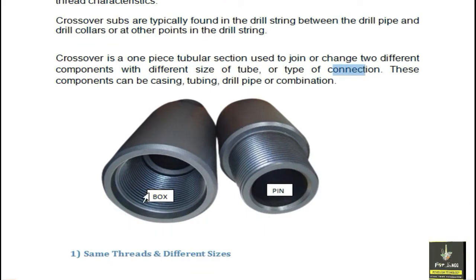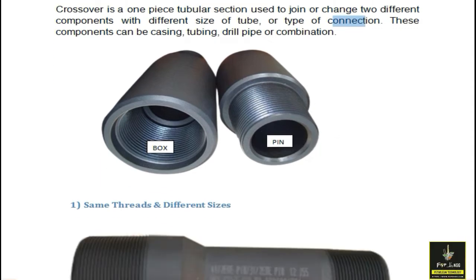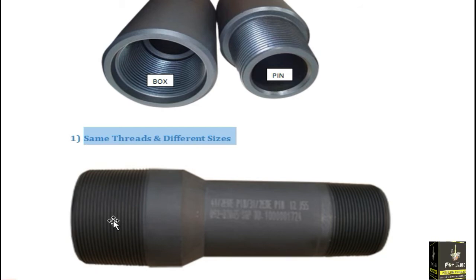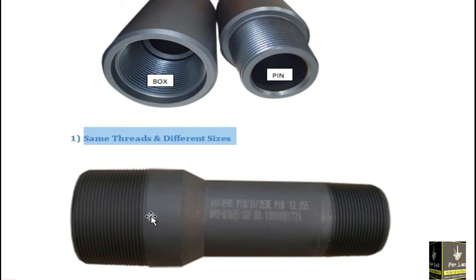This is a type of crossover — the internal part is known as the box and the external part is known as the pin. There are three scenarios. In the first scenario, you have the same threads but different sizes. In this connection the threads are the same on both sides, but the sizes are different — one is smaller and one is larger. This is known as a crossover.